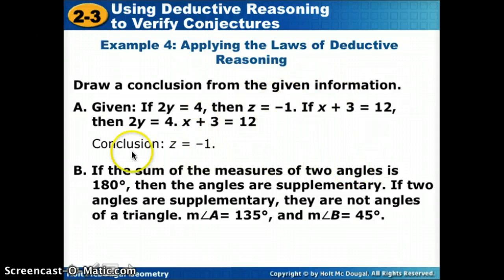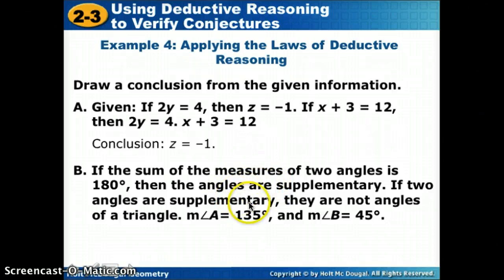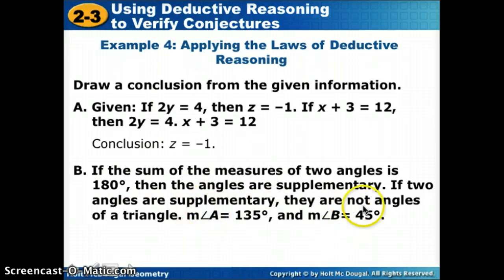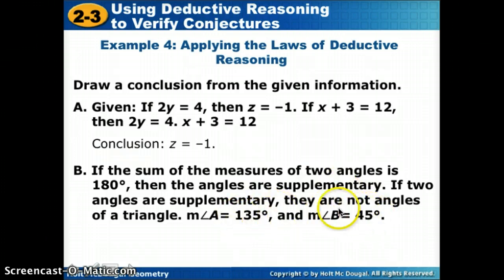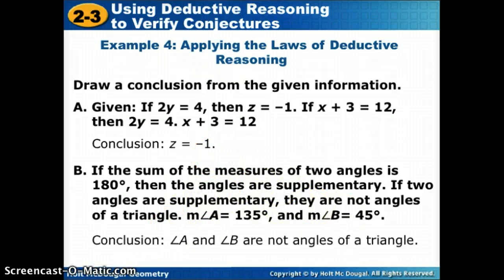Let's try another: if the sum of the measures of two angles is 180, then the angles are supplementary. If two angles are supplementary, they are not angles of a triangle. The supplementary matches as the conclusion of the first and hypothesis of the second. So: if the sum of two angles is 180, they are not angles of a triangle. Given angles of 135 and 45 — since 135 plus 45 equals 180 — we can say those angles are not angles of a triangle by law of syllogism. We'll practice these in class. Watch the video again if needed and ask questions.